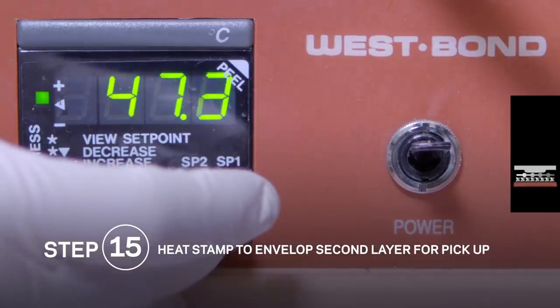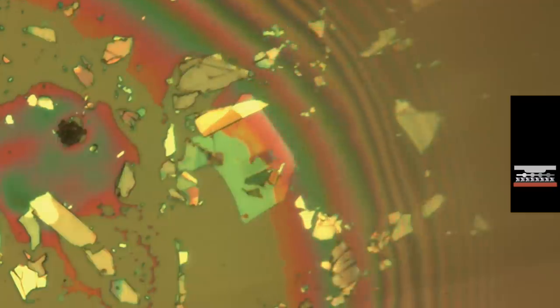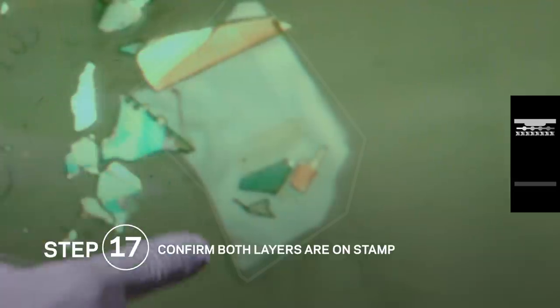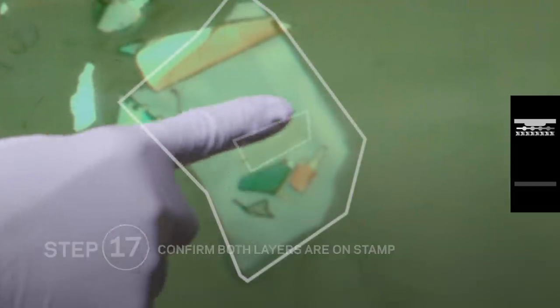Heat the substrate and then pick it up. We now have a hexagonal boron nitride and molybdenum sulfide layer attached to the stamp.